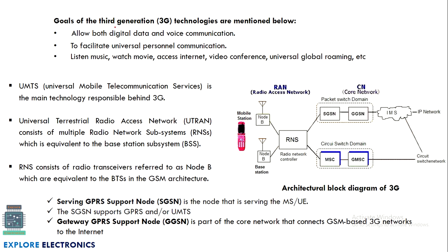The goals of 3G include allowing both digital data as well as voice communication. Moving to 3G, it will support whatever facilities were given by 2G and 1G. In 1G we had only voice; in 2G we had SMS; in 3G, data transmission is supported. Voice communication and digital data are allowed in 3G, and it facilitates universal personal communication like global roaming, listening to music, watching movies, accessing the internet, and video conferencing.